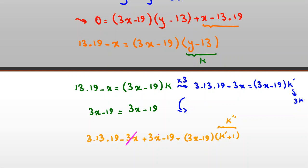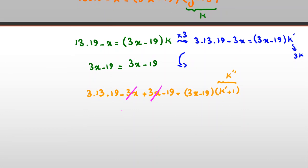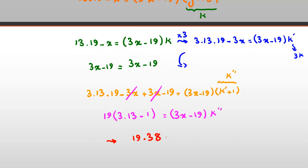After cancelling and factoring from 19: 3×13 = 39, minus 1 gives 38. So we get 19×38 = (3x − 19)×k′′. Since 38 = 19×2, this becomes 19² × 2 = (3x − 19) × k′′. Therefore 3x − 19 must be a divisor of 19² × 2.